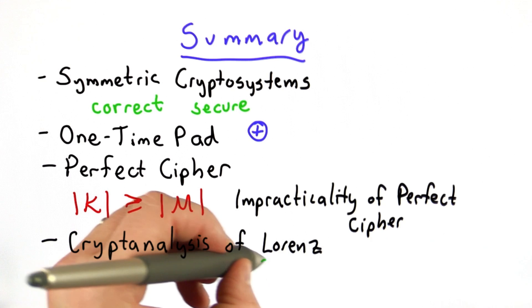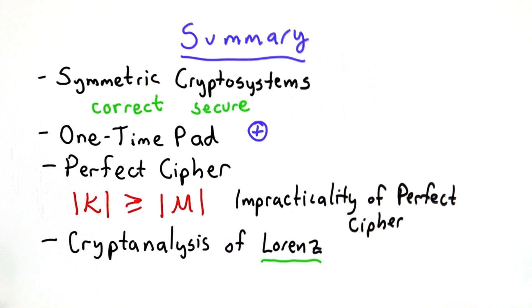We saw one very interesting example of that, with how the allies at Bletchley Park were able to break the Lorenz cipher.